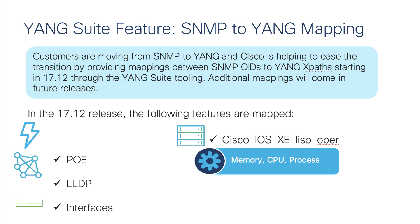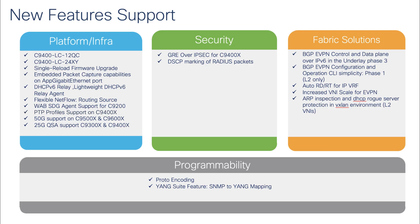With this programmability update, Cisco IOS XC enables fine-grained telemetry and eases the SNMP-to-YANG mapping. In summary, IOS XC 17.12 brings key features in terms of platform security, EVPN fabric, and programmability.